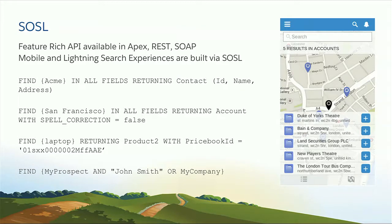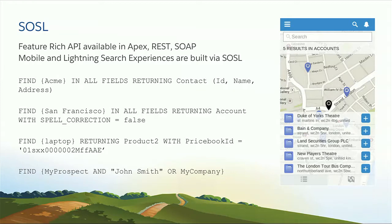SOSL starts with a FIND clause. On screen I have a couple of examples. The first one: I want to search Acme in any field and return contacts with a set of fields — ID, name, addresses. You can also use SOSL to disable spelling correction if you don't want the search to use it. We have special support for some entities like price books that behave slightly differently. Users can type any complex Boolean expression in the system and we support that. On the right-hand side you see a mobile application built on top of SOSL, searching for accounts and returning name and address.